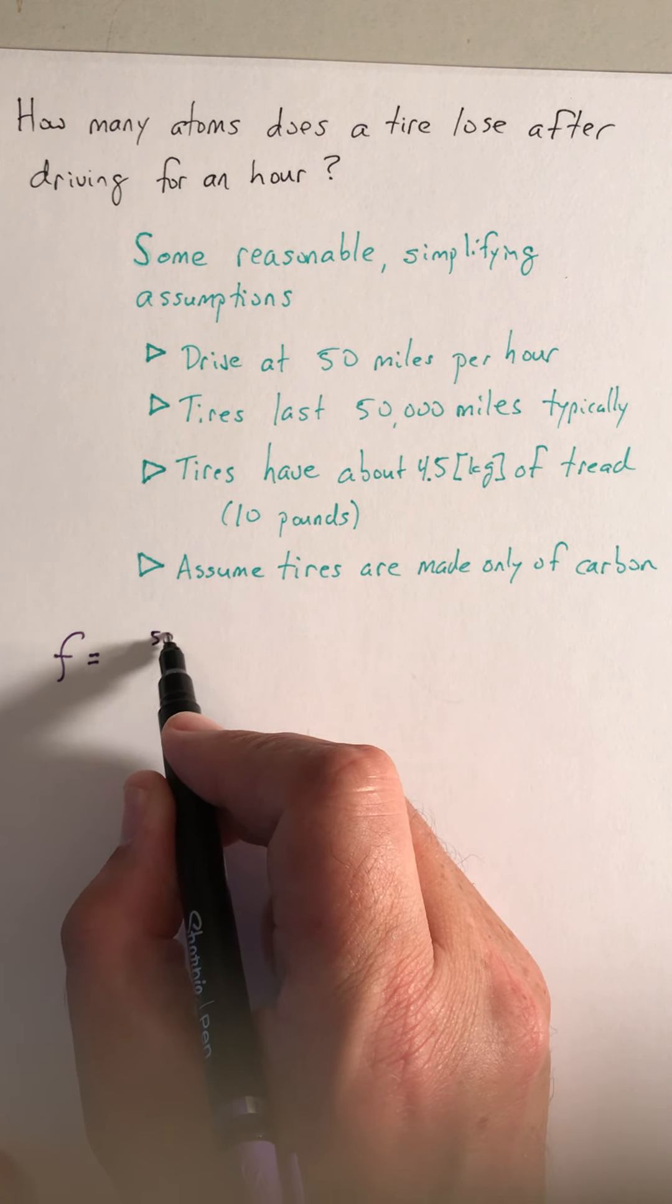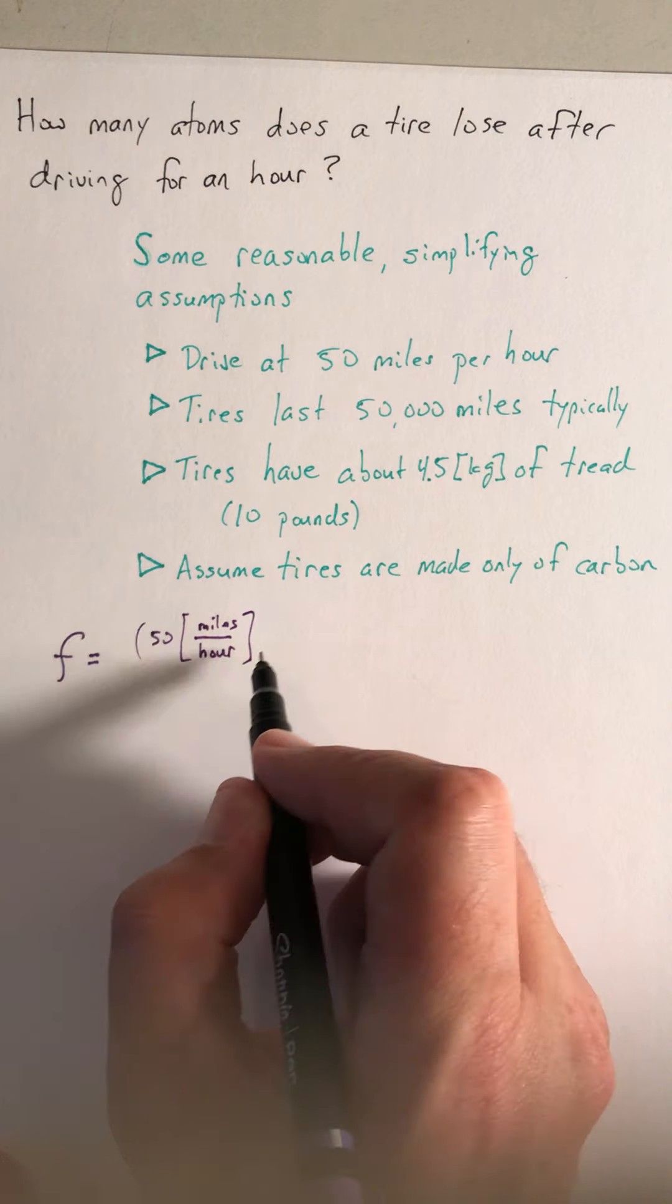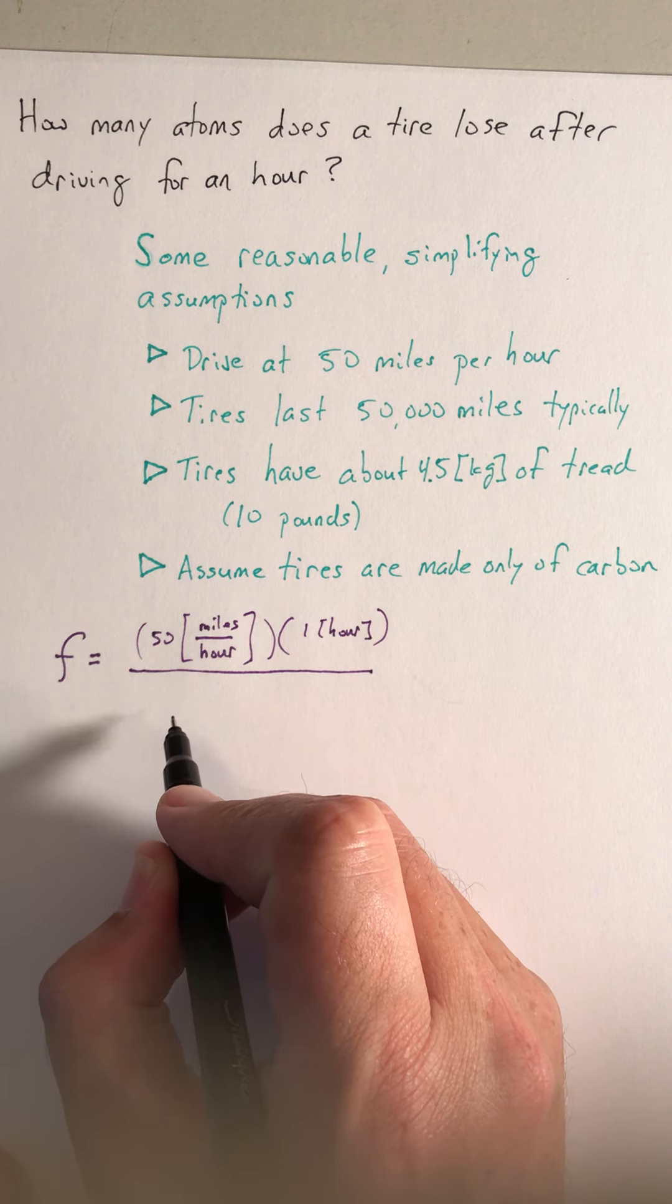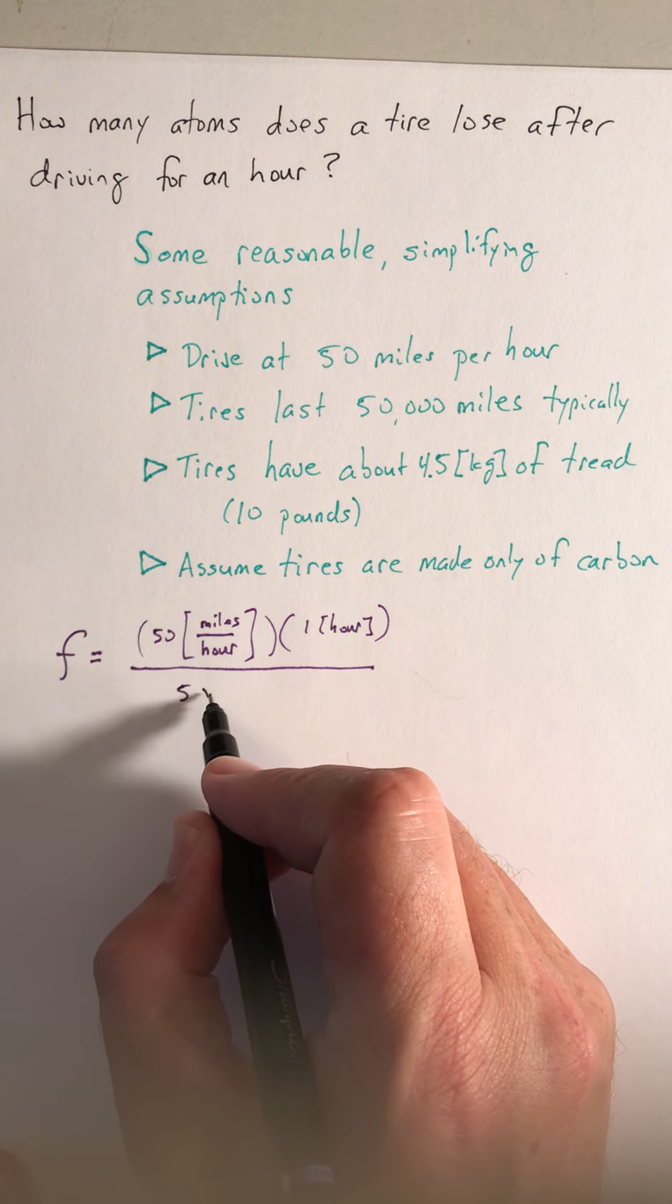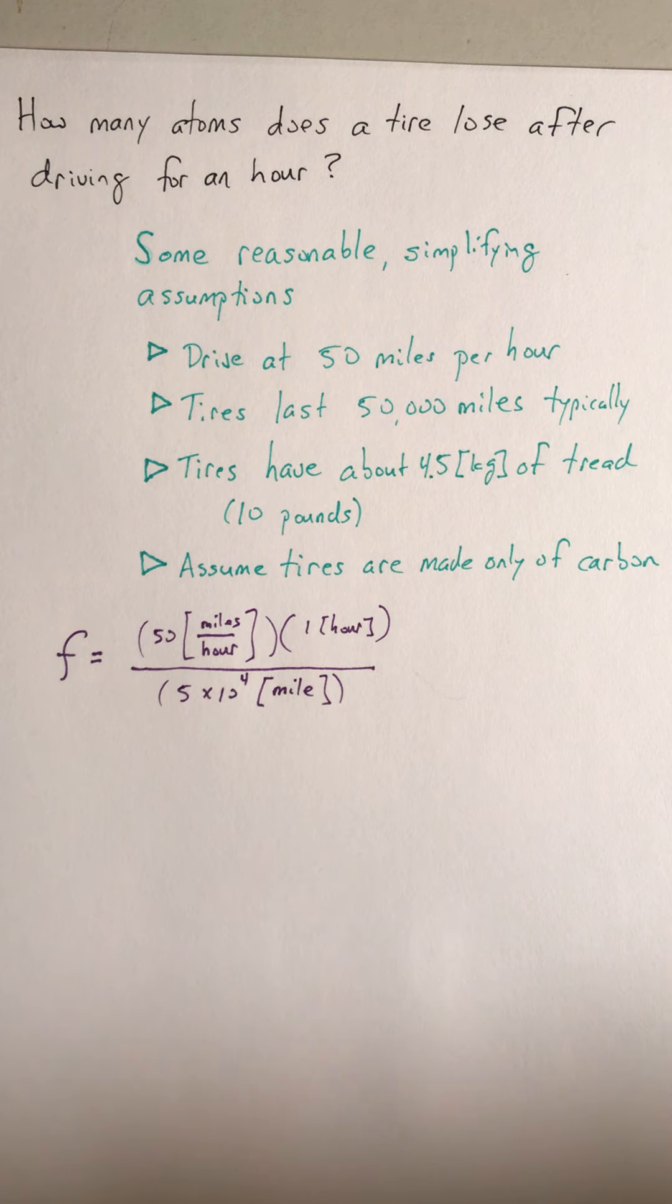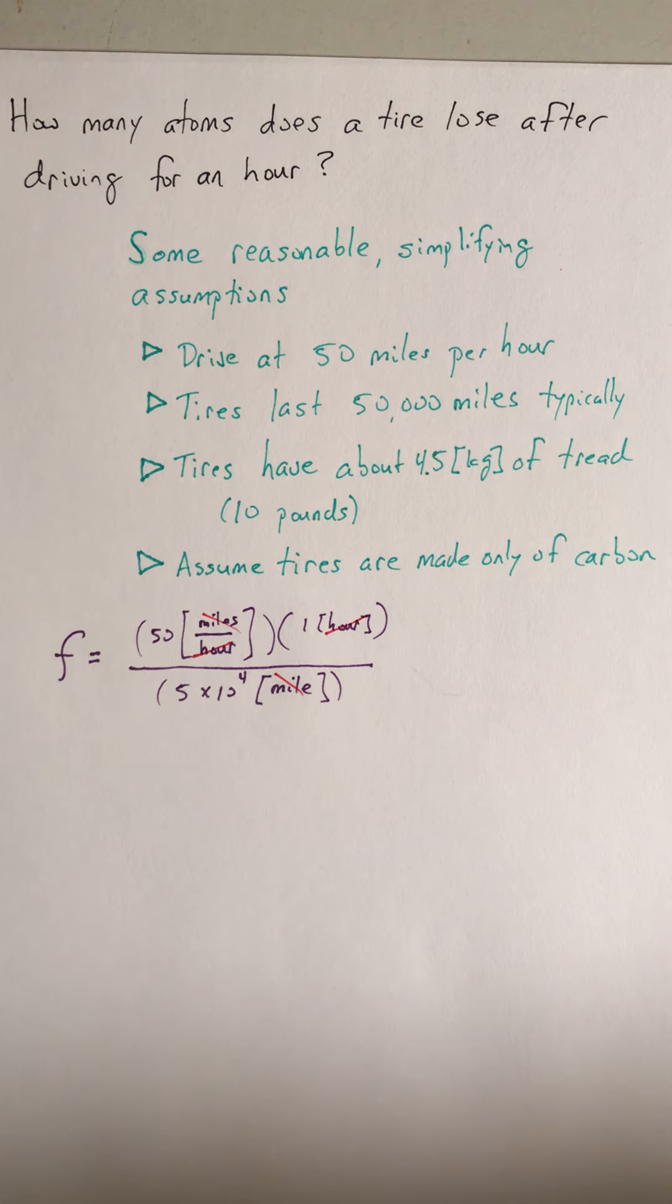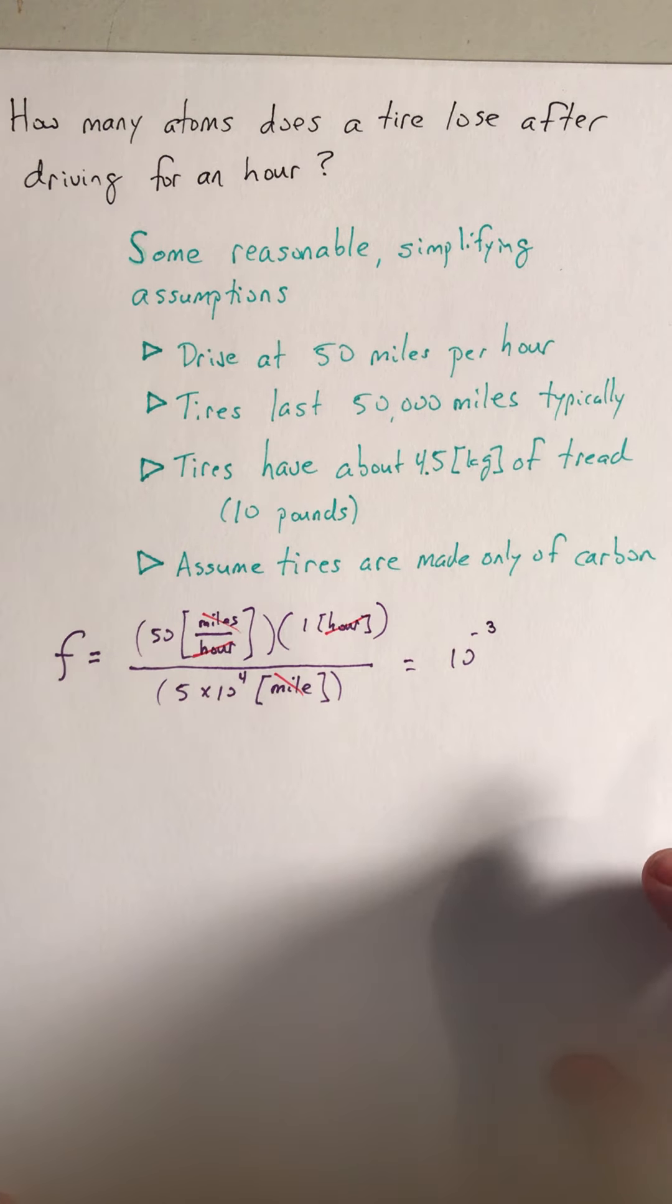Driving at 50 miles per hour times a time of one hour gives us a distance. The total distance that a tire can last for, we assume, was 50,000 miles—that's 5 times 10 to the 4th miles. Everything cancels out: hour cancels hour, mile cancels mile, and that fraction is just 10 to the minus 3.